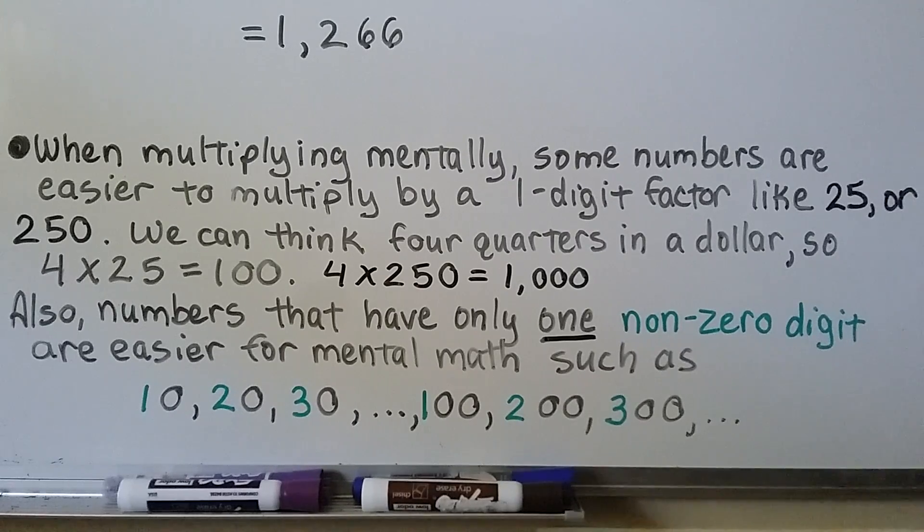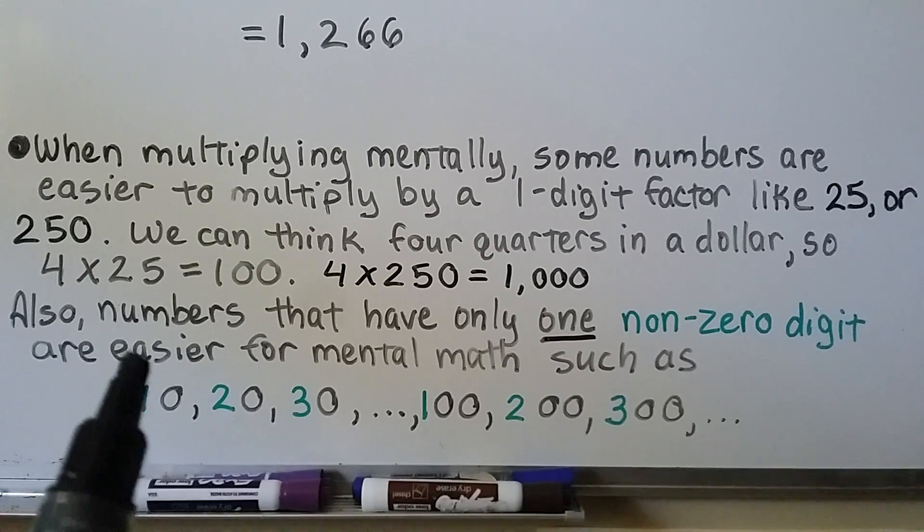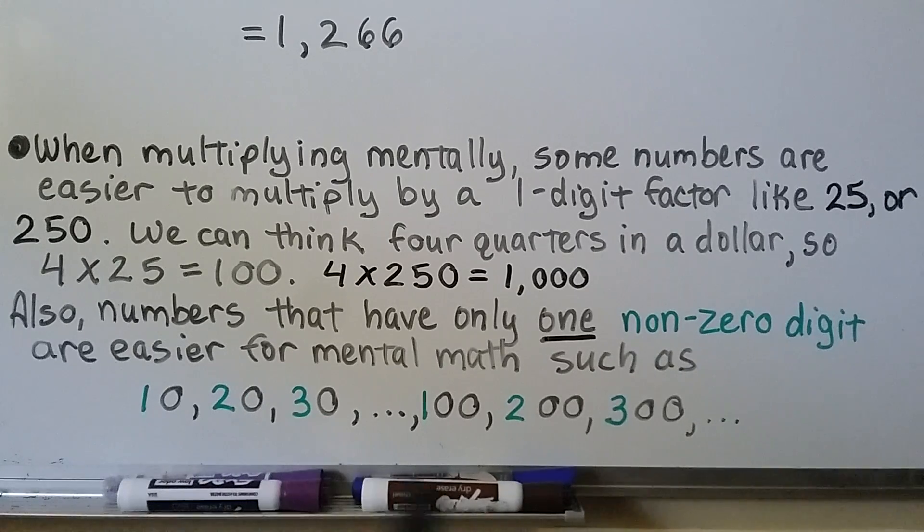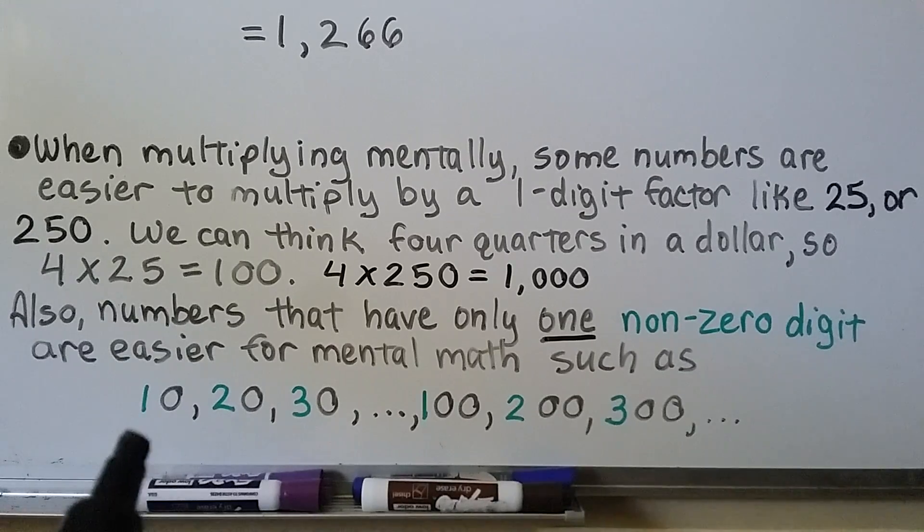Also, numbers that have only one non-zero digit are easier for mental math, such as 10, 20, 30, 40, and so on, 100, 200, 300. So see how there's only one digit that isn't a zero?